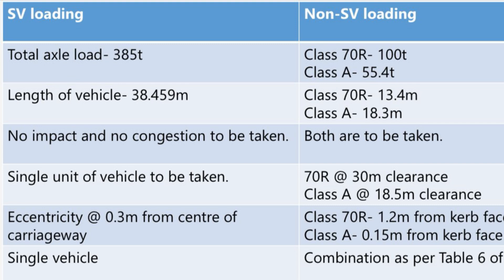4. Vehicle Configuration. In SV loading, a single unit of the vehicle is taken for analysis. However, in non-SV loading, multiple vehicles are considered. For Class 70R loading, 30 meters clearance between vehicles is considered, and for Class A loading, 18.5 meters clearance between vehicles is taken.